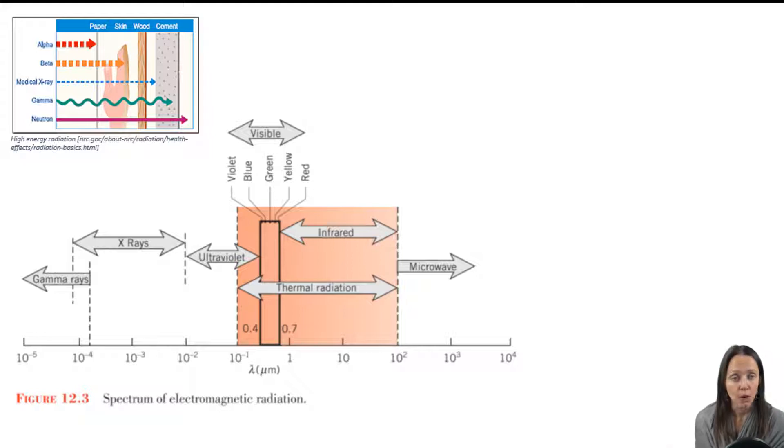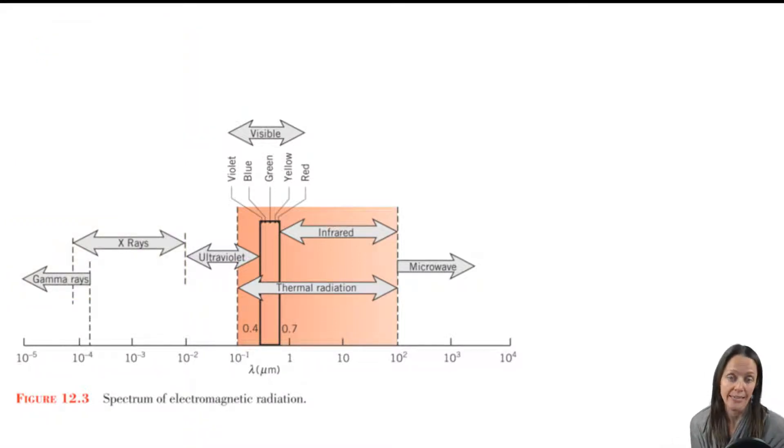So if we look at figure 12.3 from your book, we can see the spectrum of radiation. In this section, we're not talking about the high-energy radiation, such as gamma radiation or x-rays, which are the forms of high-energy radiation that can penetrate through human tissue. We're talking about thermal radiation, which is highlighted here in orangish-red.